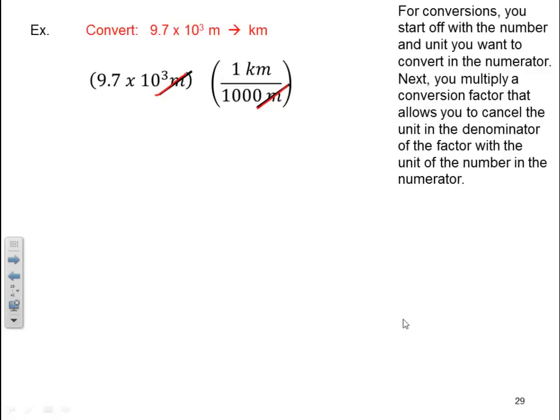And then I multiply the number. In this case, it would be 9.7 times 10 to the third. Multiply that time one and divide by a thousand and come up with some numeric number, which in this case is 9.7. And then I carry on what's left in my units, which is kilometers. So the answer here is 9.7 kilometers, making sure I follow with my significant figures. In this case, the thousand meters to one kilometer, that's a conversion factor, an exact number that I'm not going to count for my sig figs. So all I have is my starting number of 9.7.